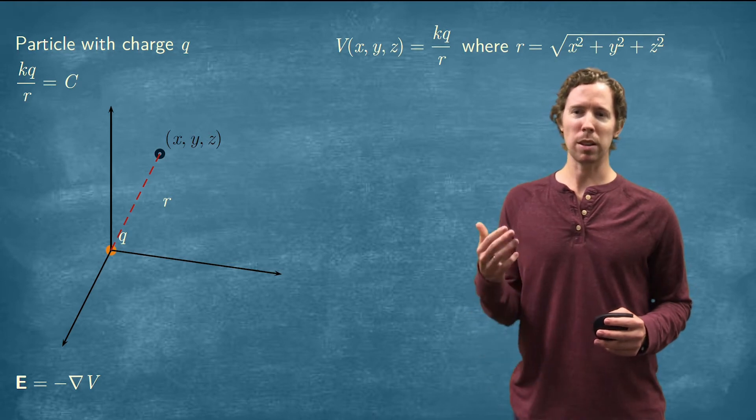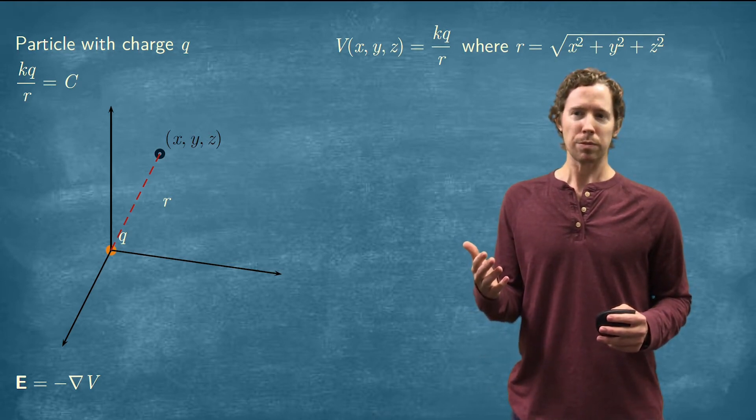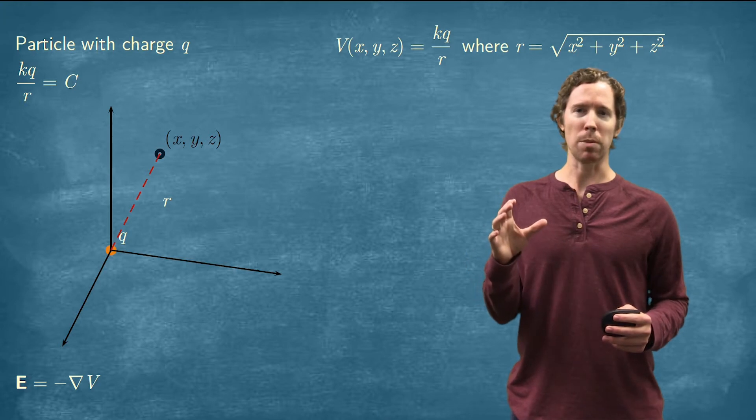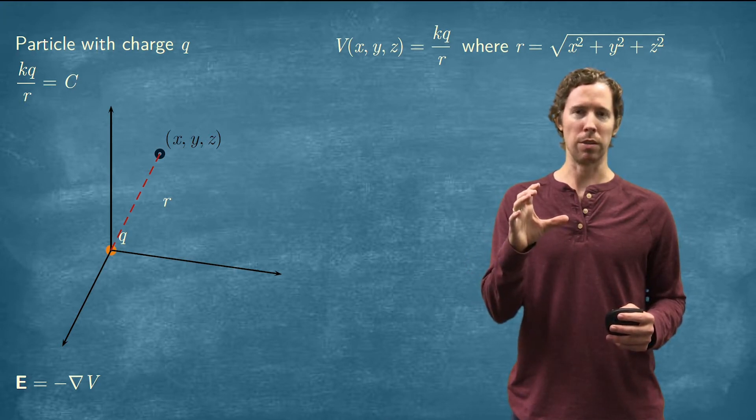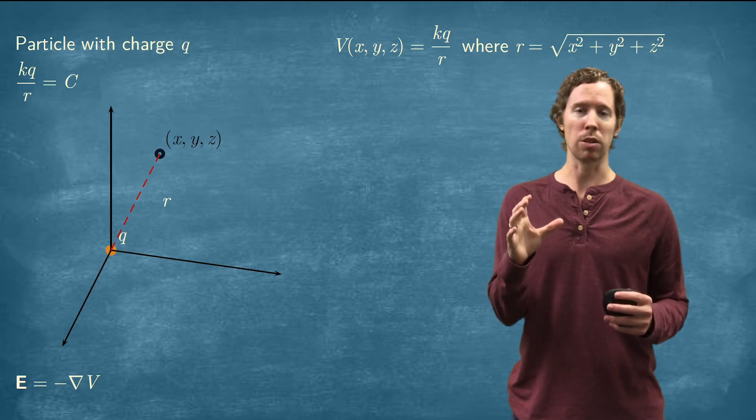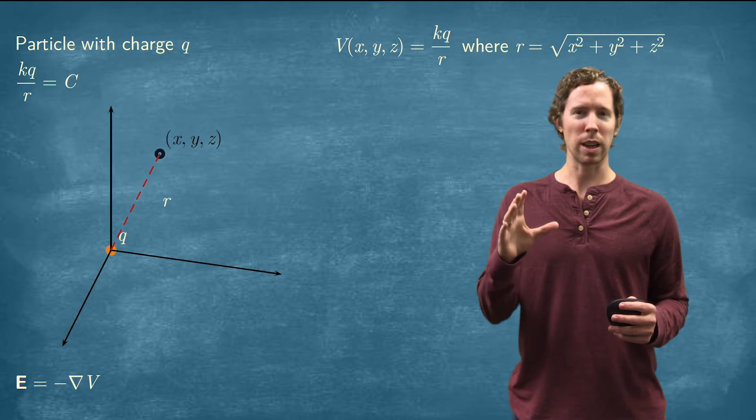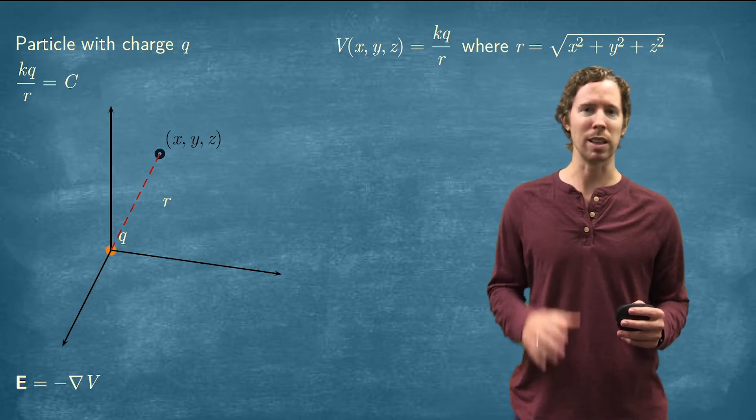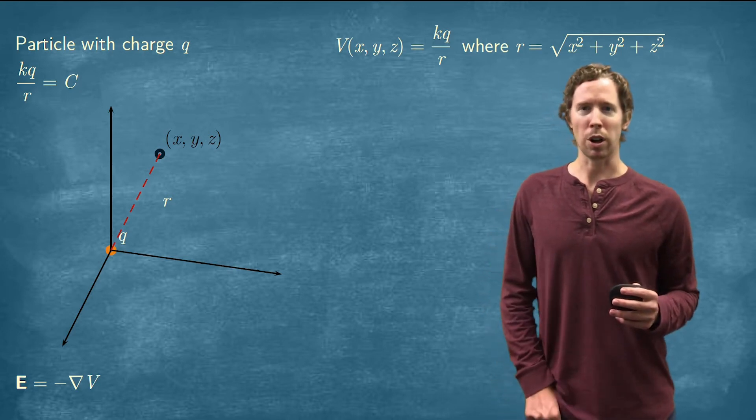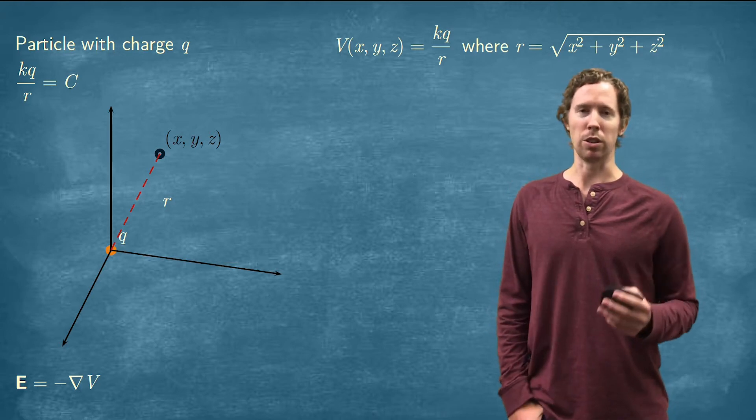If we think about the geometry of this electric field, one thing that we can think about is what will the level curves of this electric potential be. So if we set the electric potential equal to a constant C, what will those surfaces look like?